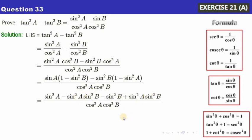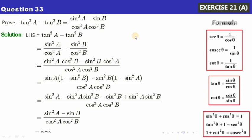The two sin²A·sin²B terms cancel each other, giving us sin²A minus sin²B. Note there was a typing mistake earlier — all terms should have the square notation. This equals the right-hand side, so the proof is complete. You may pause the video and note down the solution.